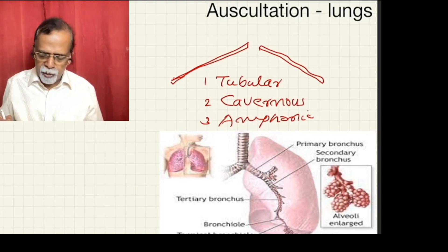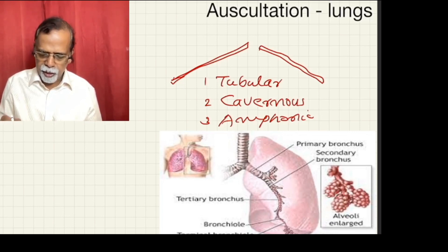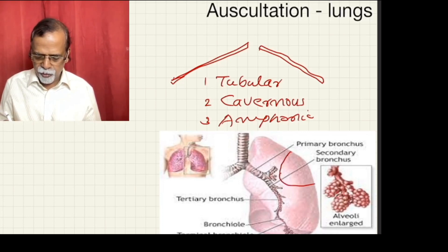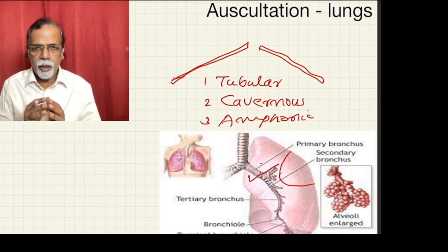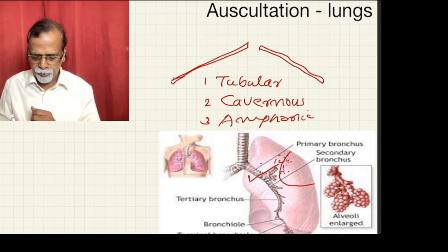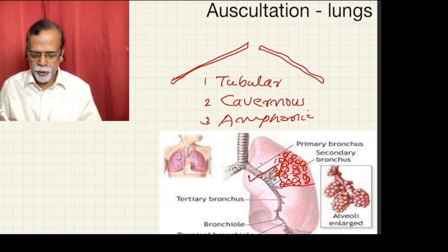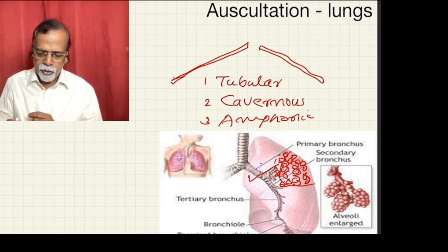The high-pitched bronchial breathing sound is heard when the normal lung parenchyma is destroyed and the airway is patent. The lung's filtering action is lost — for example, when this part gets consolidated. Consolidation means the alveolus gets solidified, and solids are good conductors of sound. So if the airway is patent, the result will appear as bronchial breathing. Tubular breath sounds are heard classically in consolidation.